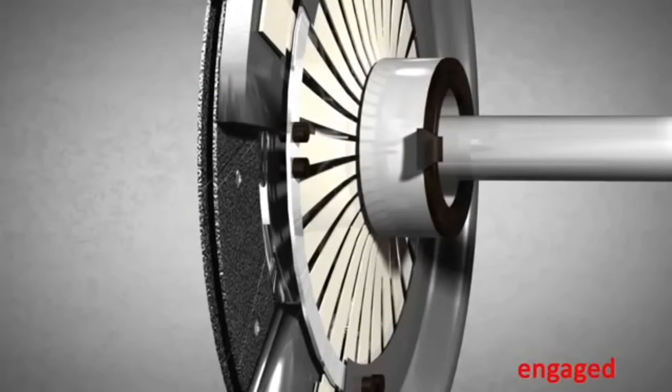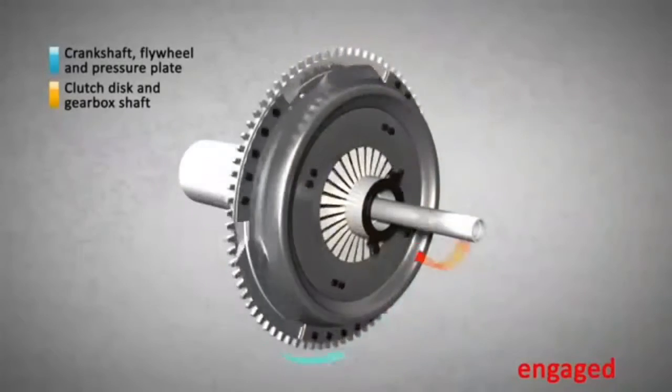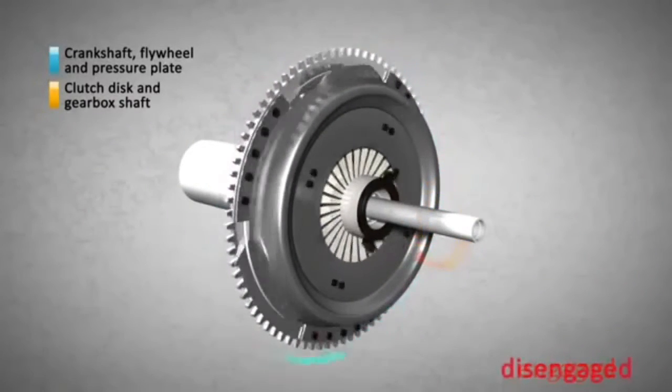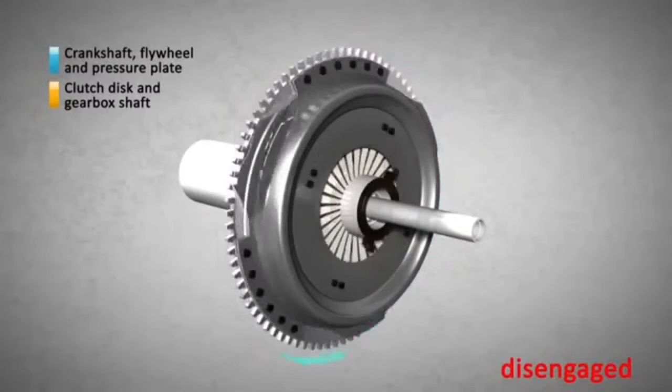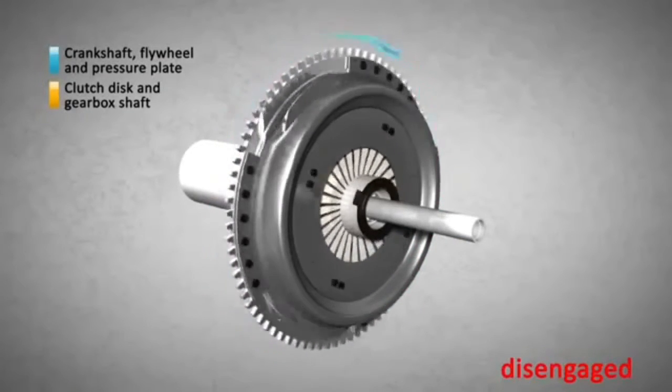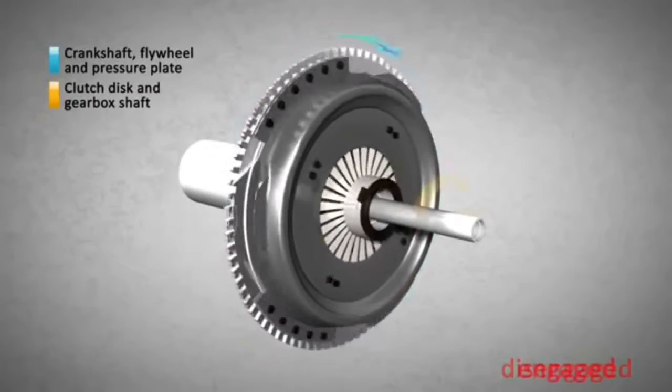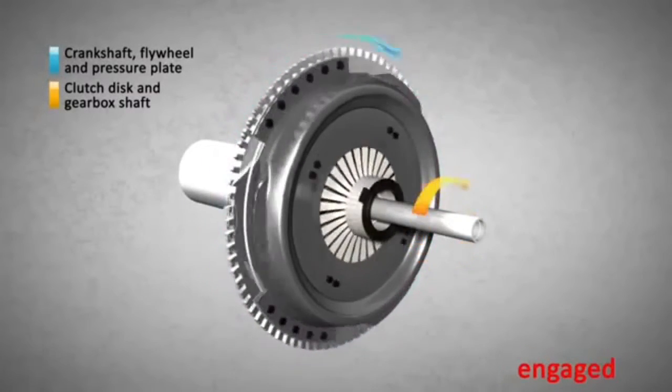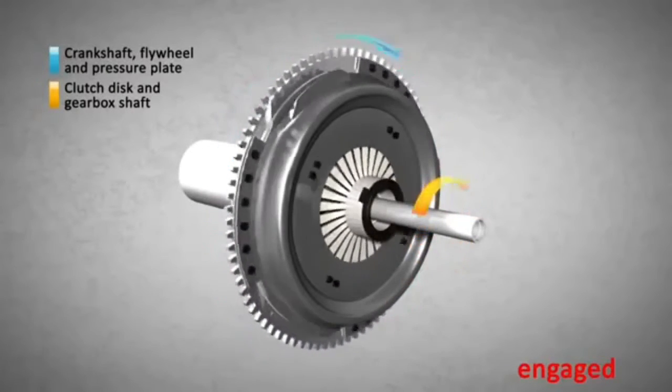So, the clutch disc can be locked between the flywheel and the pressure plate when the release bearing is released, and it can be released when the bearing is pushed into the diaphragm spring. The mechanical energy produced by the engine is transmitted to the gearbox when the clutch release bearing is released and the clutch disc is engaged.